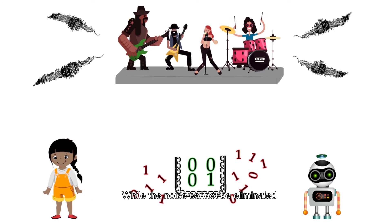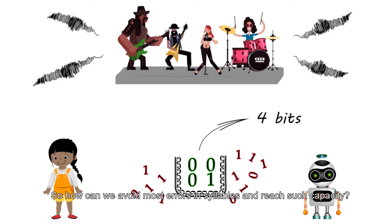While the noise cannot be eliminated, our goal is to let Bob receive Alice's information as much as possible. The maximum number of bits we could transmit per syllable with arbitrarily low error probability is called the capacity of the channel. Let's assume that in our story, the capacity is only 4 bits per syllable.